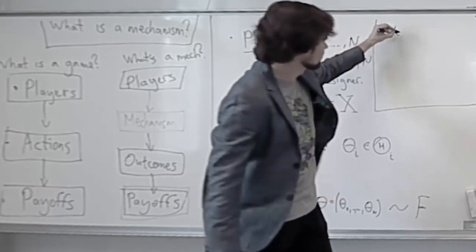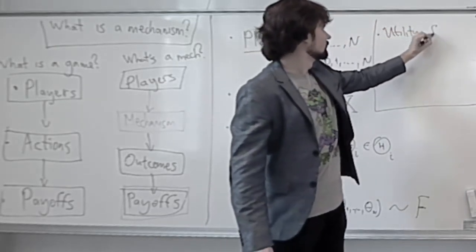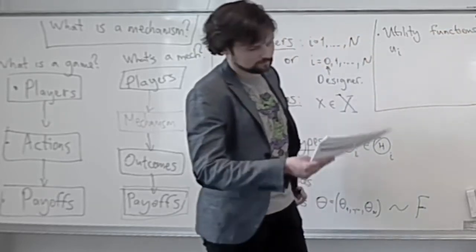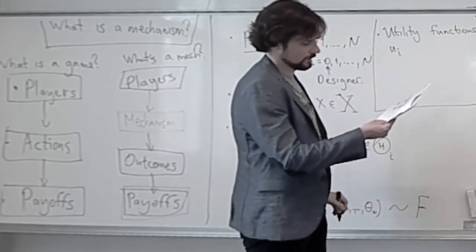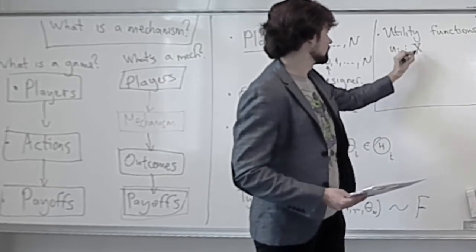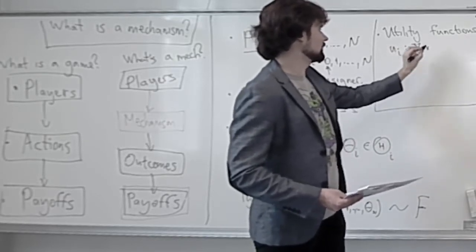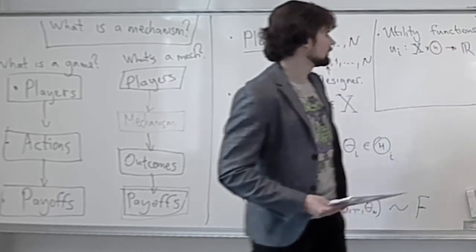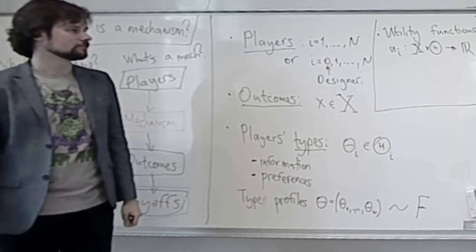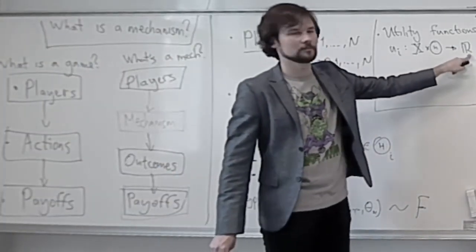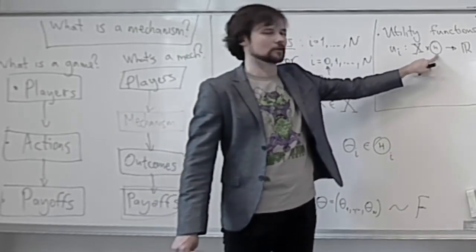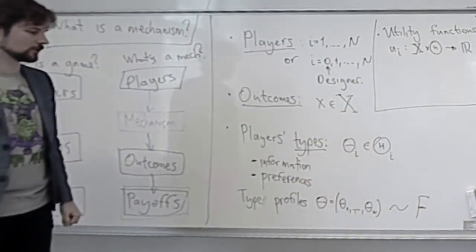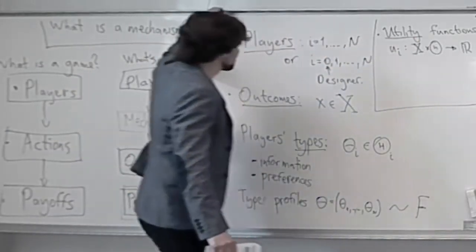The utility functions uᵢ map outcomes and types — big X times big Θ — into the real numbers. So you get some utility value from every outcome, but the utility you get does depend on your type, and in general it might depend on other players' types as well, though this will not be the case for most of what we discuss. So these are the primitives. What is left is we still don't know what a mechanism is, and we don't have the terminology to talk about what outcome we want to achieve.